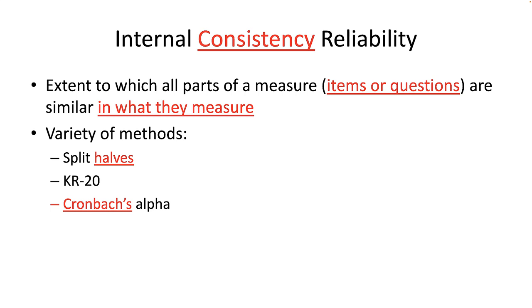Cronbach's coefficient alpha is a measure of internal consistency for tests using ordinal, interval, or ratio scales that are not dichotomous. This is the most common form of internal consistency reliability for attitude and trait measures and other tests using Likert responses that are not scored right/wrong.